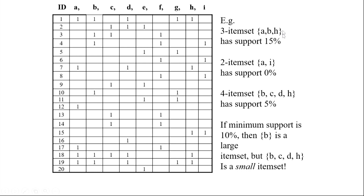If we take the cutoff as 10 percent, then ABH with 15 percent support will be part of the large item sets. If the minimum support is 10 percent, then B is a large item set. However, B, C, D, H is a small item set because it occurs only 5 percent of the time. B alone occurs 6 times out of 20 — that is 30 percent — so B is a large item set.